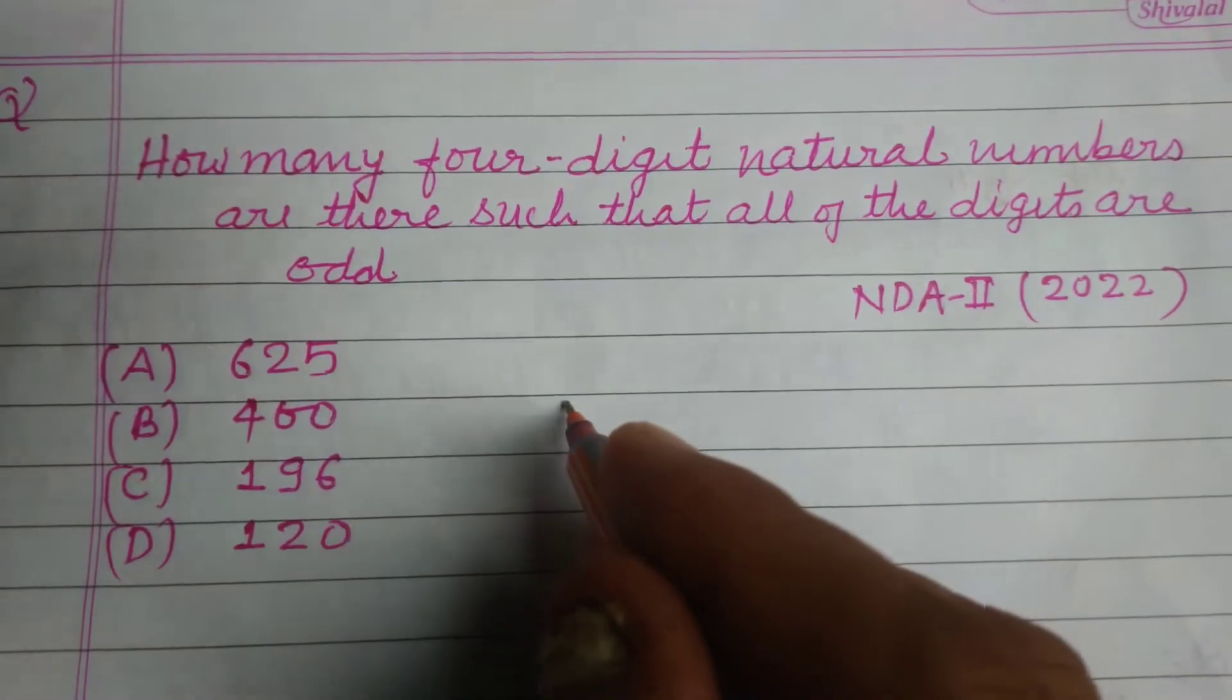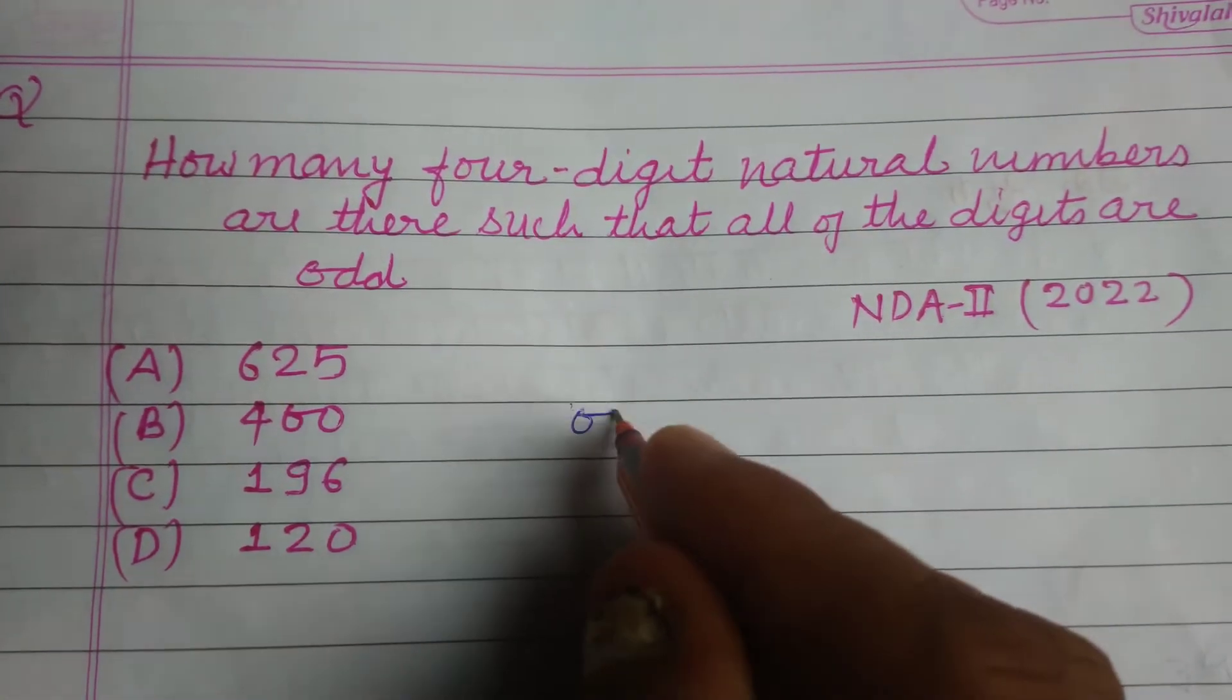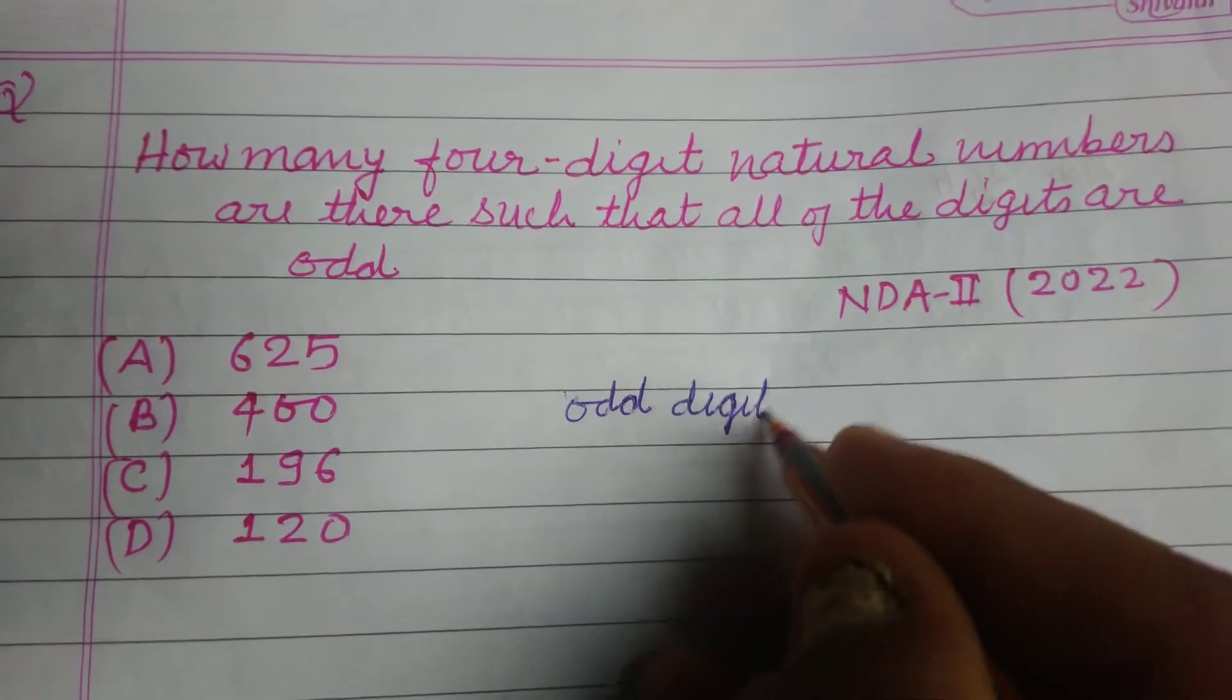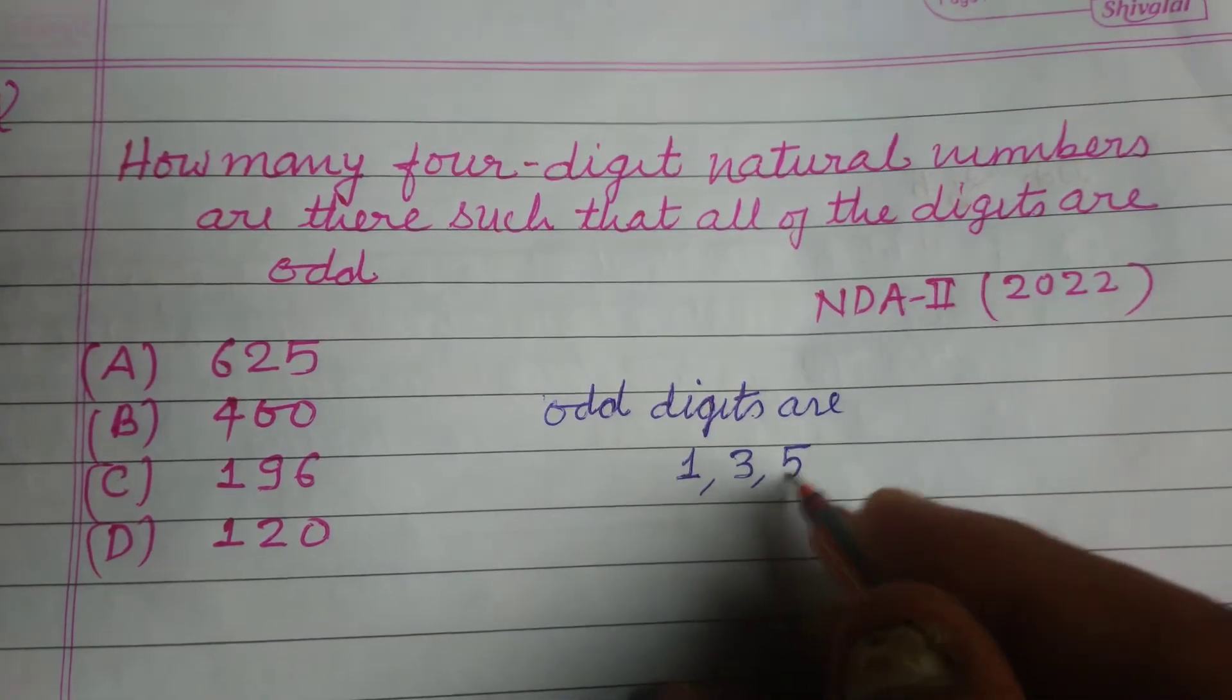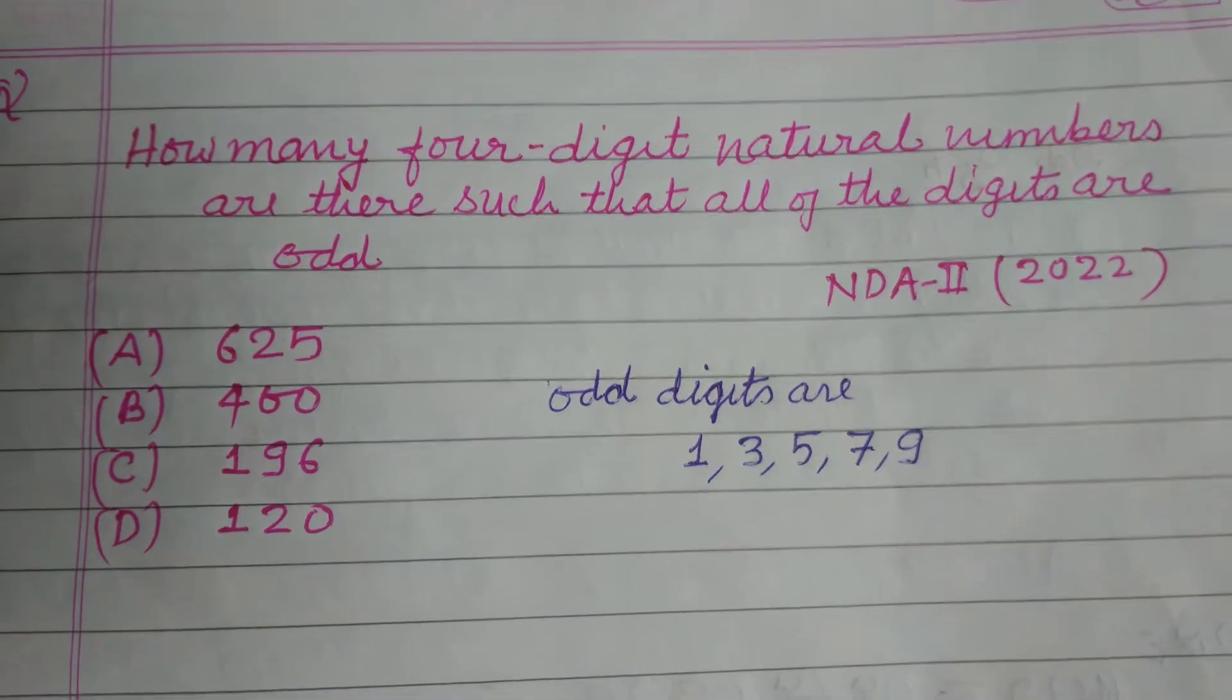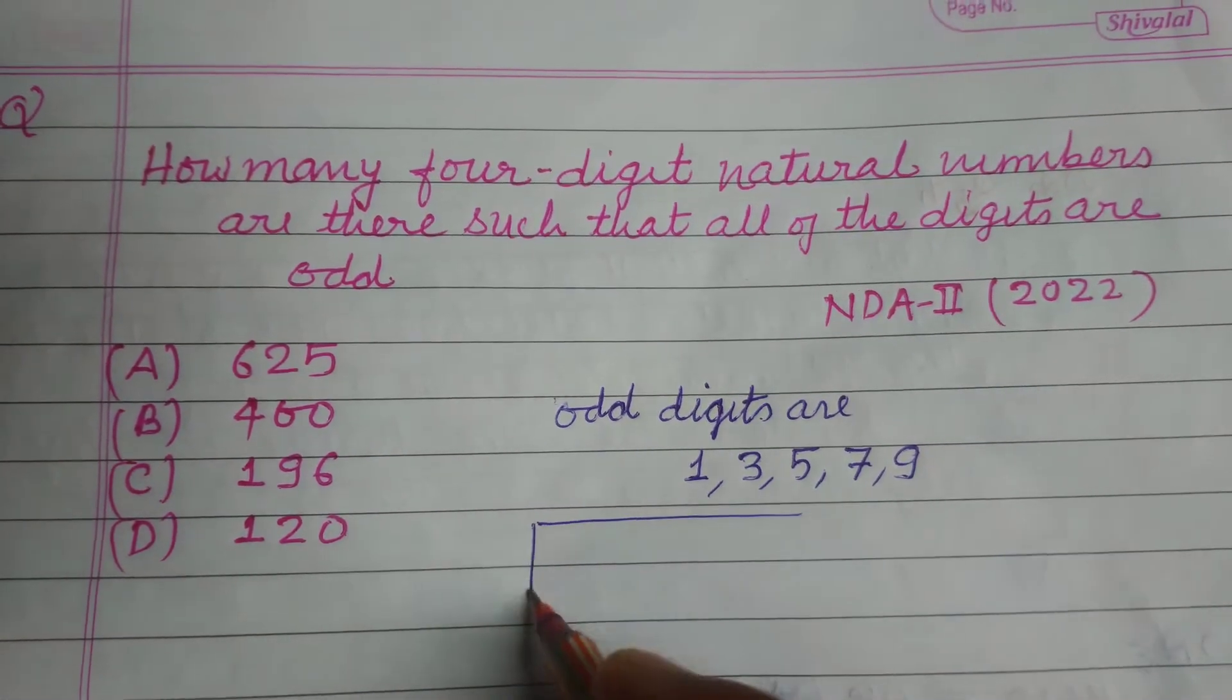Here all of the digits are odd. The odd digits are 1, 3, 5, 7, and 9. As you know, we want to make a four-digit number.